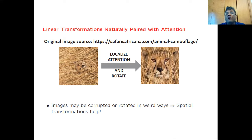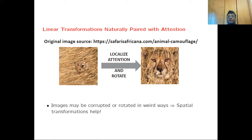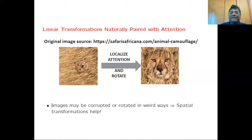Aside from focusing on specific parts of the image, there are other aspects that sometimes make classification more difficult. For example, objects may sometimes be rotated or scaled in strange ways, and being able to transform these images back to their natural position often makes classification easier. With some objects, they are rotation invariant, meaning that rotating the image doesn't affect classification. With other objects, they are harder to classify if the image gets rotated. Here we have an example where the cheetah image has been rotated, and by both magnifying and rotating the image, it becomes easier to classify.